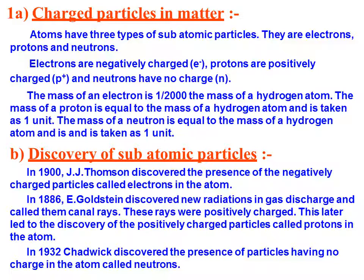The mass of an electron is 1/2000 of the mass of a hydrogen atom. So the electron is almost 1/2000 of the mass — it is a very small particle. The mass of the proton is equal to the mass of the hydrogen atom and is taken as 1 unit. The mass of the neutron is also equal to the mass of the hydrogen atom and is taken as 1 unit. But the electron is 1/2000 times the mass of a hydrogen atom.